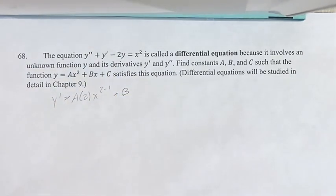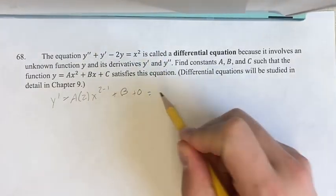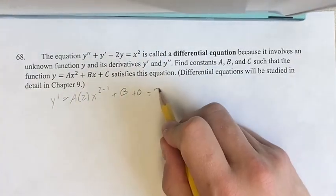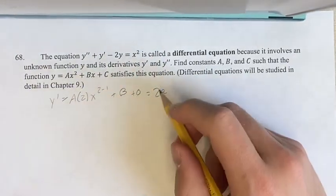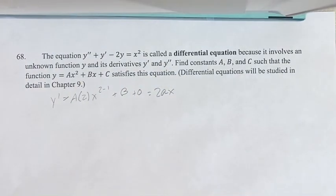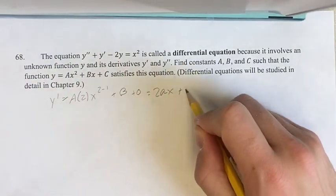...you can say that the coefficient is the derivative. And then the derivative of a constant, c, is just going to be 0. And therefore the derivative is equal to 2ax to the 2 minus 1, which is just x to the first power, which is x, plus b plus 0 is just plus b.